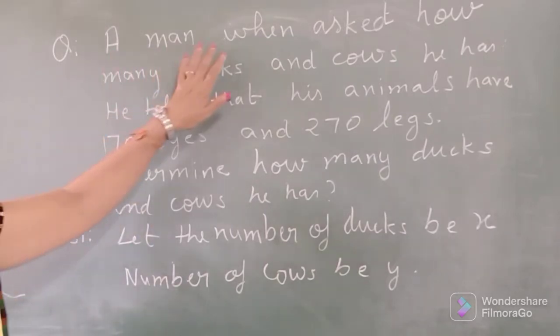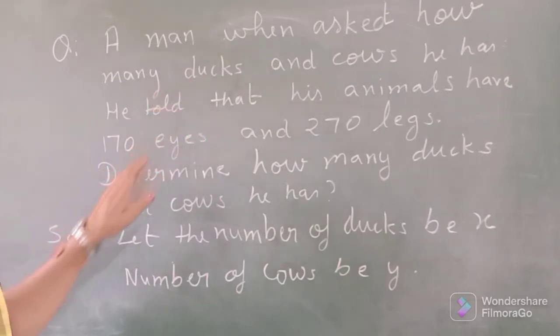A man was asked how many ducks and cows he has. He told that his animals have 170 eyes and 270 legs. Determine how many ducks and how many cows he has.